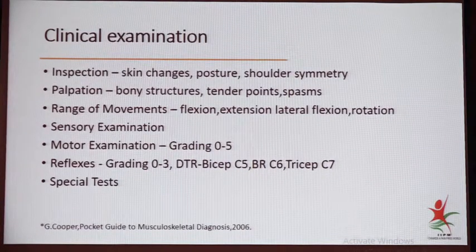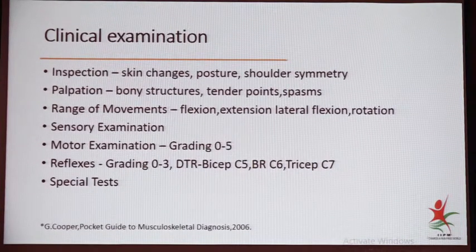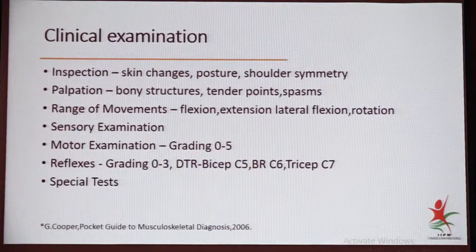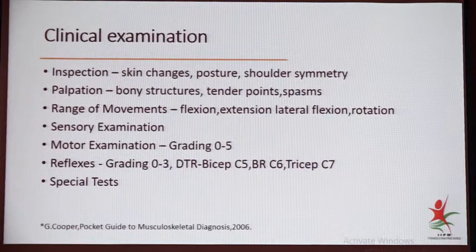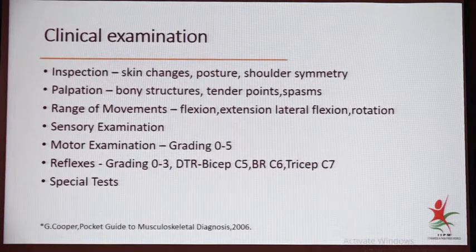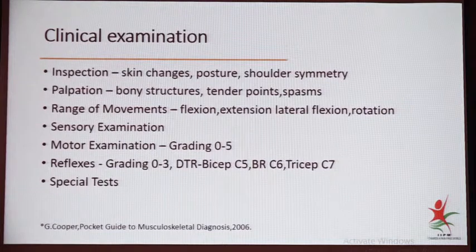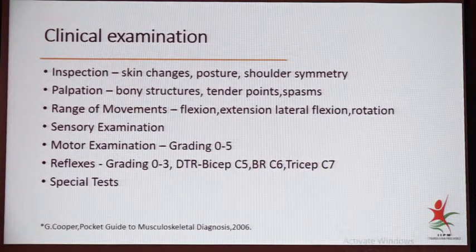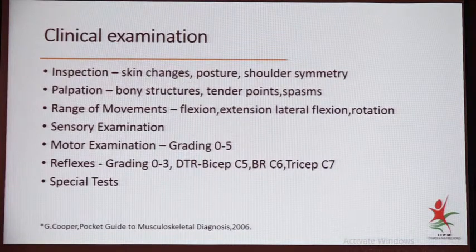Range of movements — flexion, extension, and lateral flexion: all four ranges should be assessed. This gives a lot of clues: lateral flexion is affected in degenerative arthritis, and rotation is the earliest to be affected in rheumatoid arthritis because of the odontoid peg. These clues help when you examine systematically. Sensory examination — each nerve root must be examined according to its dermatome. Motor examination — grading from zero to five is very important, where zero is no movement and five is normal muscle power. Progressive sensory and motor loss is a sign of red flags.